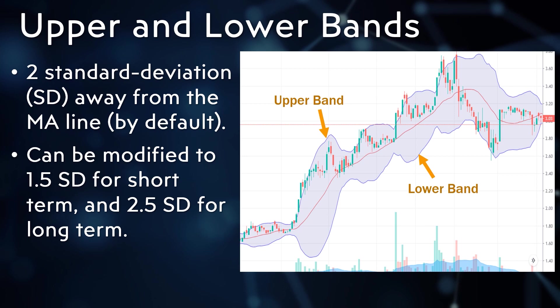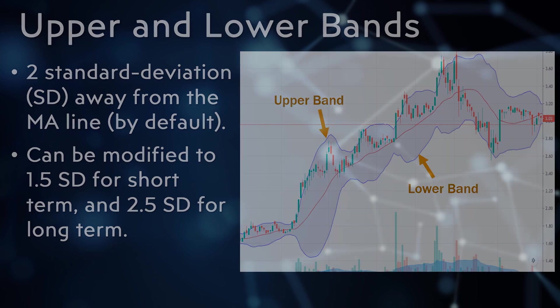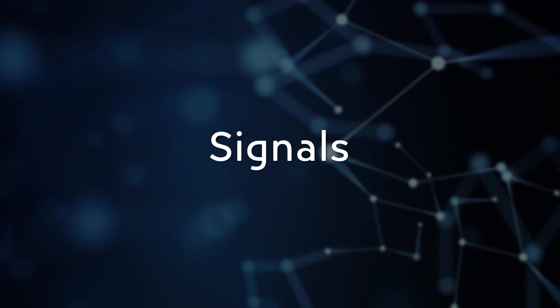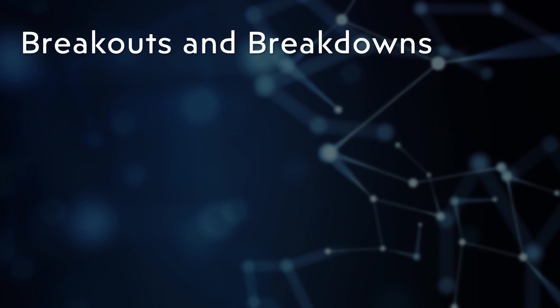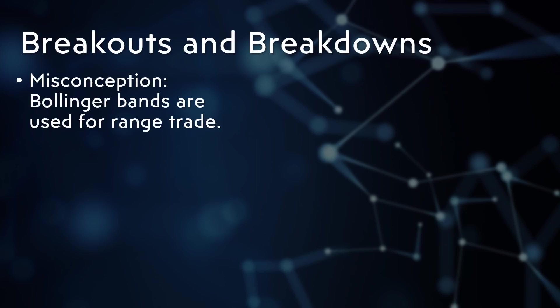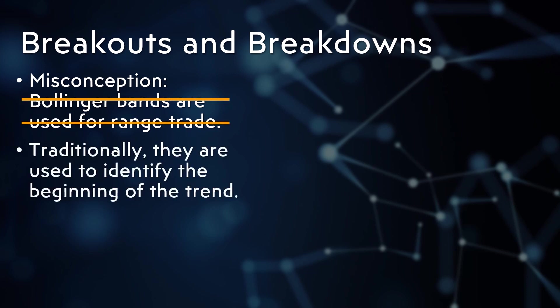The standard deviation can also be modified according to the trader's preference. For short-term traders, 1.5 SD is preferred in conjunction with a 10-day MA, while long-term investors prefer 2.5 SD with a 50-day MA. For our discussion, we will use the default value of 2 SD. A common misconception is that Bollinger Bands are used in range trading, but traditionally they are used to identify the beginning of a trend.